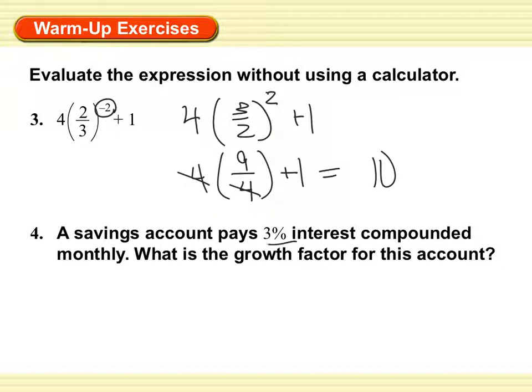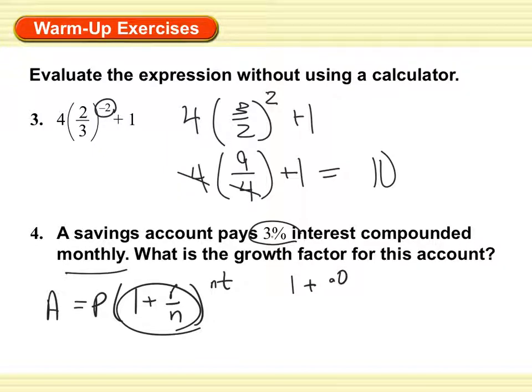A savings account pays 3% interest, compounded monthly. What is the growth factor for this account? Let's remember this equation here. This in the middle is going to be my growth factor. And n is the number of times it compounds, compounded n times per year. So I have 1 plus 0.03 over 12. And I get 1.0025 as my growth factor.